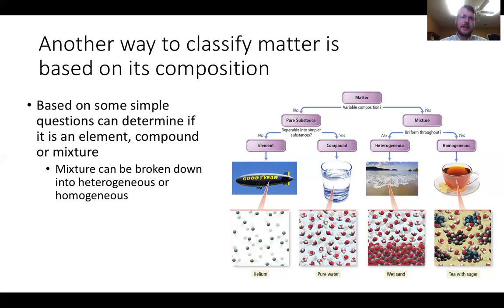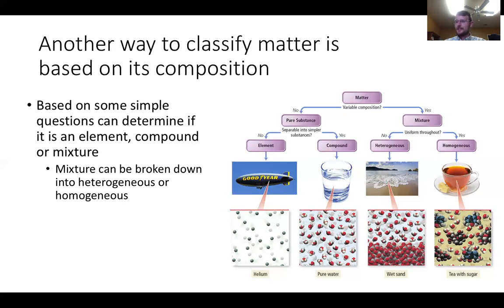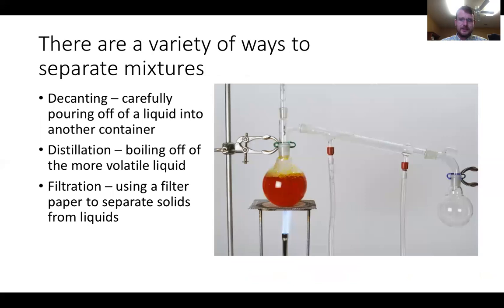Another test for a heterogeneous mixture: take two handfuls of M&Ms from a bowl. The odds of getting the exact same number of M&Ms in the same colors in both hands is extremely low — that's heterogeneous. If you have any questions as you go through these, please ask me or your classmates. We're here to help each other.